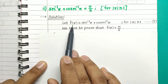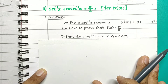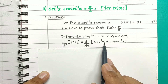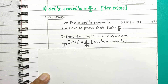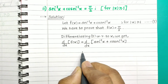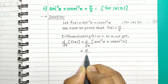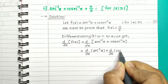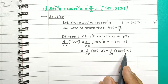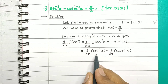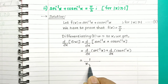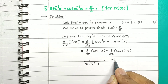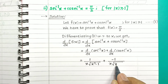We have to use derivatives, so differentiating equation 1 with respect to x, we get derivative of f of x equal to derivative of sec inverse of x plus cosec inverse of x. This equals d by dx of sec inverse of x plus d by dx of cosec inverse of x. Derivative of sec inverse of x is 1 upon x into square root of x square minus 1, and derivative of cosec inverse of x is minus 1 upon x into square root of x square minus 1.